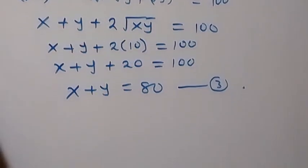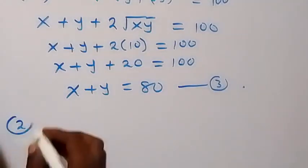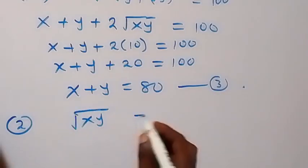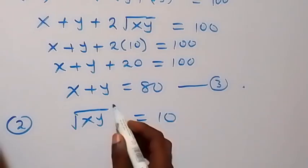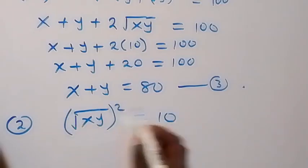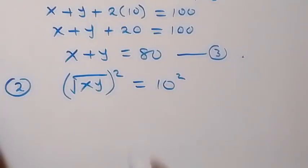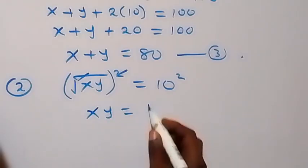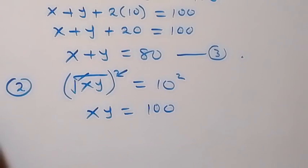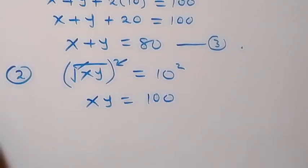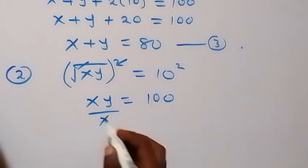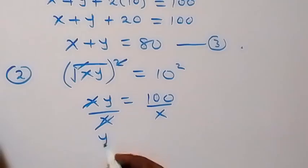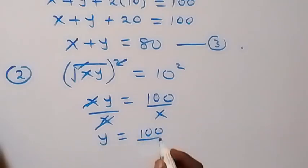And also from equation 2, what we have there, which is root xy equals to 10. From here as well, let's square both sides. The square cancels the square root. We have xy now equals to 10 squared, 10 times 10, that's 100. Then from here, we can divide both sides by x in order to make y the subject. So that x cancels out, and y will now be equal to 100 over x.